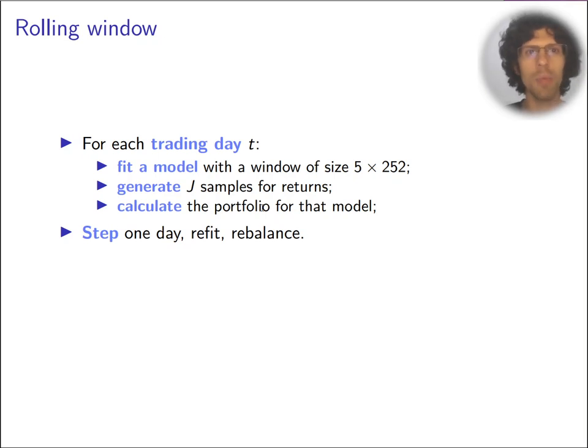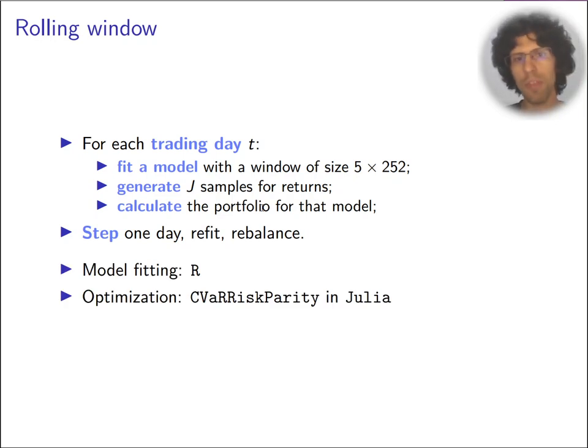But with all that, we did what we wanted to do. We did that for several days in a row where we fit a model, we generate samples, we calculate the portfolio, and we do that all over again. The model fitting was done in R and it was offline. The optimization we packed into the CVaR risk parity package, which is available in Julia.